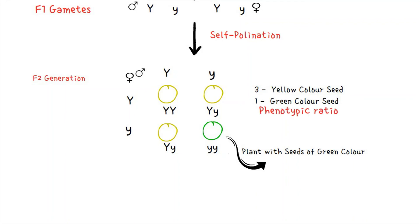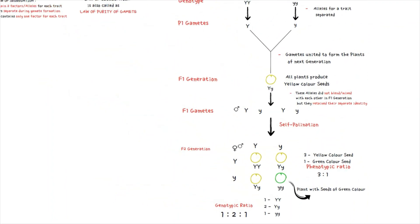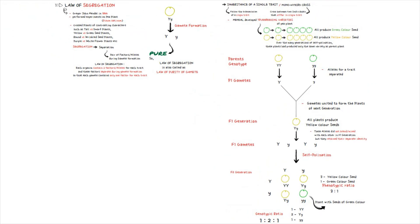In the F2 generation, three plants have yellow seeds and one plant has green seeds, giving a phenotypic ratio of 3:1. The genotypic breakdown is: one plant with genotype capital Y capital Y (YY), two plants with capital Y small y (Yy), and one plant with small y small y (yy). Therefore, the genotypic ratio in the F2 generation of a monohybrid cross is 1:2:1. This concludes today's topic.